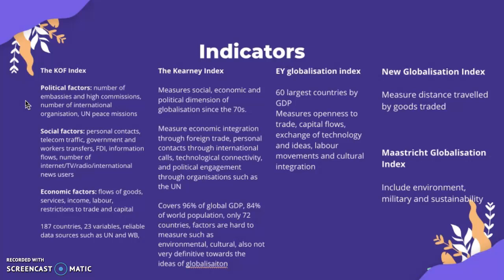The Kearney Index also measures the social, economic, and political dimensions of globalization and has done so since the 1970s, while the KOF Index started around 2002–2003. It measures economic integration through foreign trade, personal contacts through international calls, technological connectivity, and political engagement through organizations such as the UN. It covers 96% of global GDP and 84% of world population, but only includes 72 countries rather than 187. Limitations include difficulty measuring environmental and cultural factors and a lack of a definitive concept of what globalization truly is.